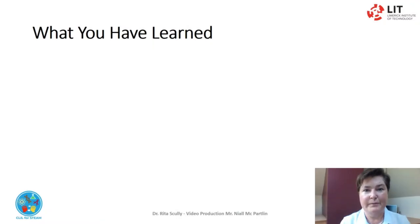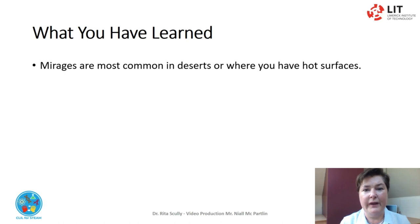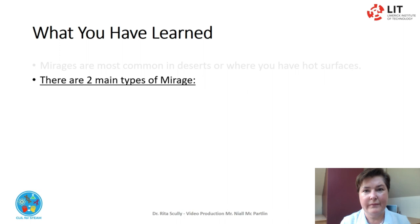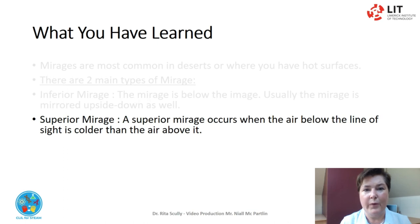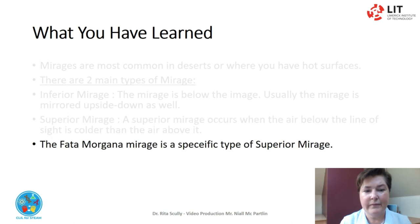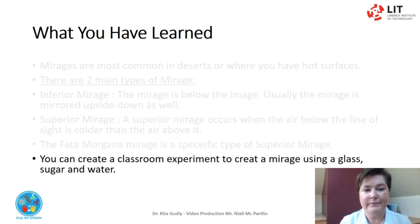What you have learned: mirages are most common in deserts or where you have hot surfaces. There are two types of mirage. An inferior mirage — the mirage is below the image, and usually the mirage is mirrored upside down as well. A superior mirage occurs when the air below the line of sight is colder than the air above it, and the image normally appears above the object. A Fata Morgana mirage is a specific type of superior mirage. You can create a classroom experiment to produce a mirage using a glass, sugar, and water.